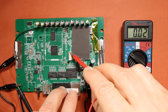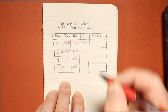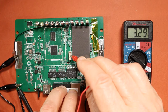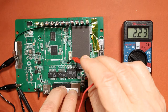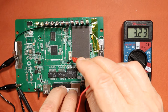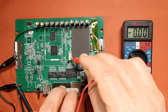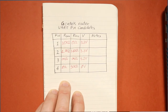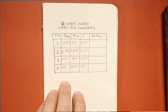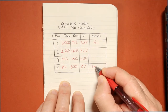We can now power up the device and take voltage measurements on each pin of this connector. We switch the multimeter to voltage measurement, connect the black probe to ground, and start taking measurements. We can see that pin 1 is at 3.3 volts (logical 1), pin 2 is at about 3.3 volts (logical 1), pin 3 is also at about 3.3 volts (logical 1), and pin 4 is at 0 volts. With these voltage and resistance measurements, we confirm that pin 1 is VCC and pin 4 is ground.